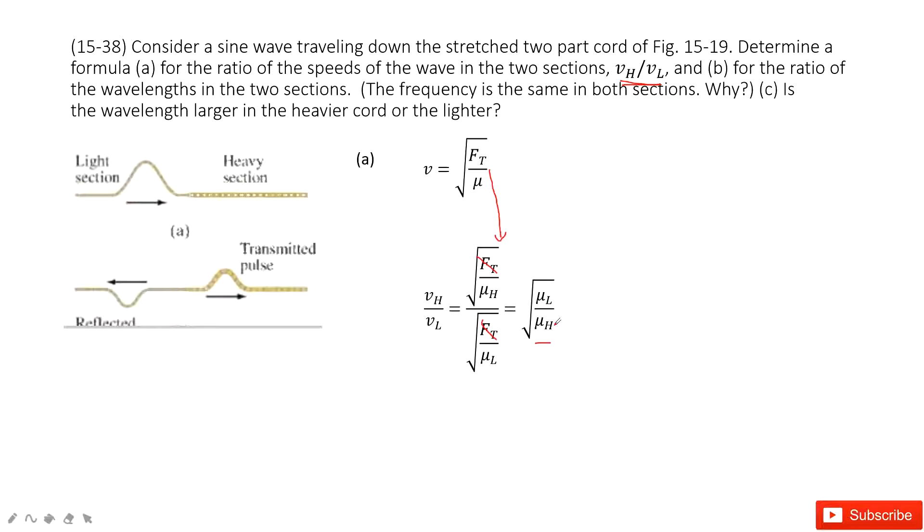These two quantities are given. The next one, we need to find the wavelength ratio for two parts. This part we just got in the previous question. We write it there.